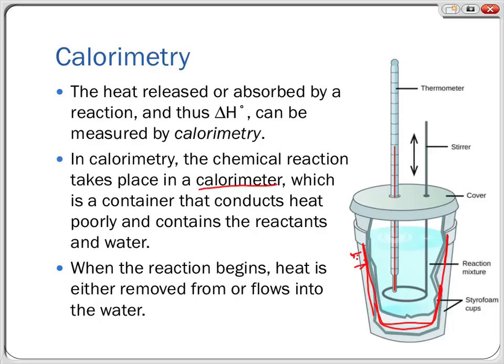Because very little heat can escape or enter through the calorimeter walls, pretty much all the heat released or absorbed by the reaction goes into or comes from the water inside. The calorimeter is filled with water, a thermometer is inserted to measure the water's temperature, and there's typically a small stirrer to ensure heat is evenly distributed — otherwise warmer water rises to the top and temperature measurements become inaccurate.